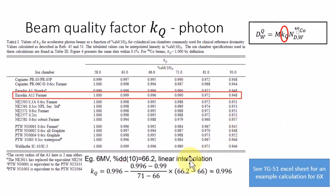For example, if we use the farmer chamber and our PDD at 10 equals 66.2, we use the 66 and the 71 value to obtain this KQ value for 66.2 by this linear interpolation equation. This is just an example of if we want to use the table to get the KQ for photon.